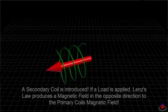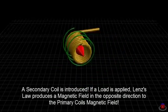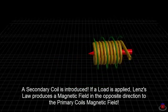A secondary coil is introduced. If a load is applied, Lenz's law produces a magnetic field in the opposite direction to the primary coil's magnetic field.